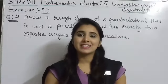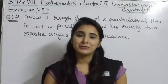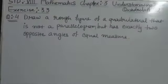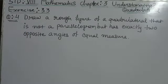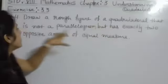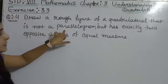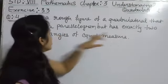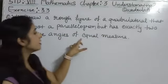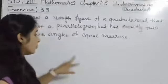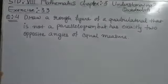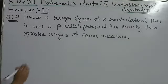Hello students, so today we are going to learn exercise number 3.3, question number 4. So the question number 4 is: draw a rough figure of a quadrilateral that is not a parallelogram, but has exactly two opposite angles of equal measure. Yani ki rough figure draw karna hai, jo quadrilateral to hoga but parallelogram nahi hoga. Is ki do opposite angles equal measure honi chahiye. To aisa kaun sa figure hai?